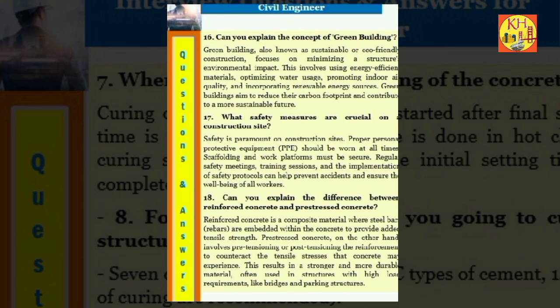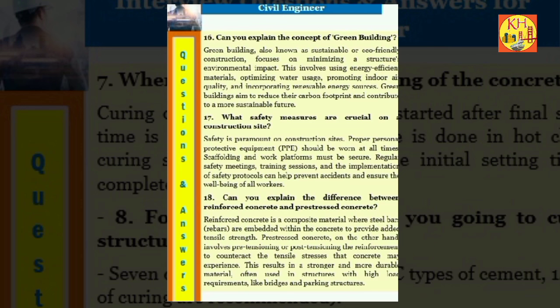Question 18: Can you explain the difference between reinforced concrete and pre-stressed concrete? Reinforced concrete is a composite material where steel bars (rebars) are embedded within the concrete to provide added tensile strength. Pre-stressed concrete, on the other hand, involves pre-tensioning or post-tensioning the reinforcement to counteract the tensile stresses that concrete may experience. This results in a stronger and more durable material, often used in structures with high load requirements like bridges and parking structures.